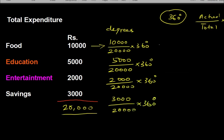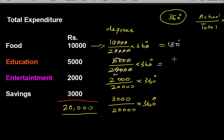Now, the zeros cancel out. Here the zeros cancel — one, two, three, four zeros cancel, one, two, three — so this actually comes to 360. Then simplifying further, the zeros cancel and this comes around to 180. You can use your calculator for these calculations.